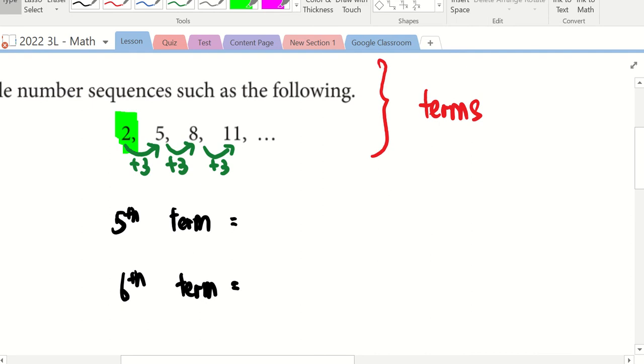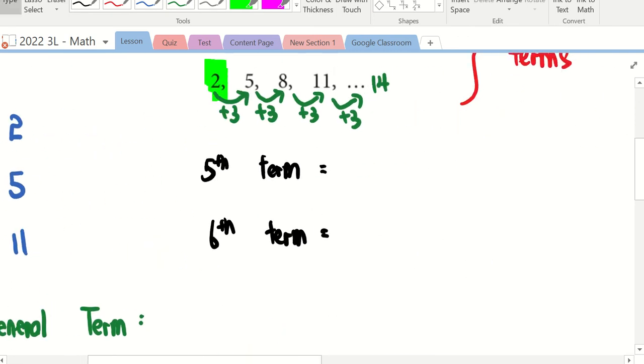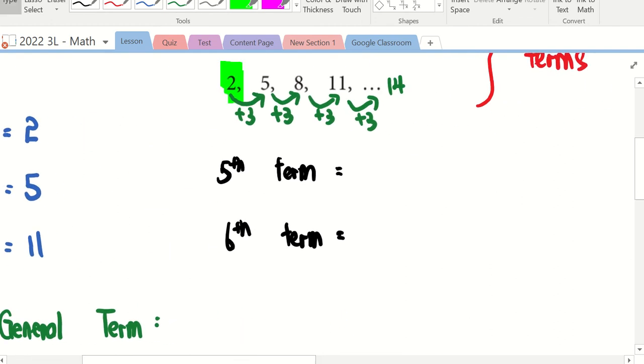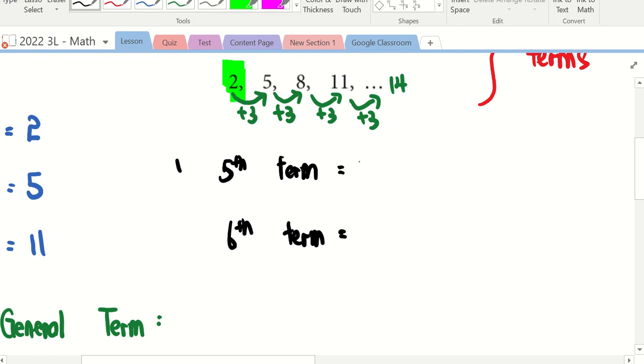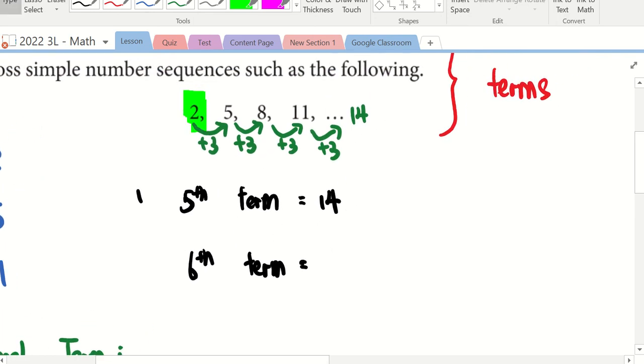Because there are only four terms given here. I want to find the fifth term. So what must I do? Plus three. What is eleven plus three? Fourteen. So the fifth term is fourteen. Then if I want to find the sixth term, I need to add another three. Fourteen plus three will give us seventeen.